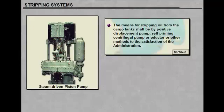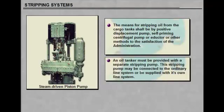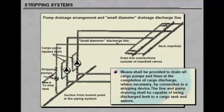Means shall be provided to drain all cargo pumps and lines at the completion of cargo discharge, where necessary, by connection to a stripping device. The line and pump draining shall be capable of being discharged both to a cargo tank and ashore. For discharge ashore, a special small diameter line shall be provided for that purpose and connected outboard of the ship's manifold valve.